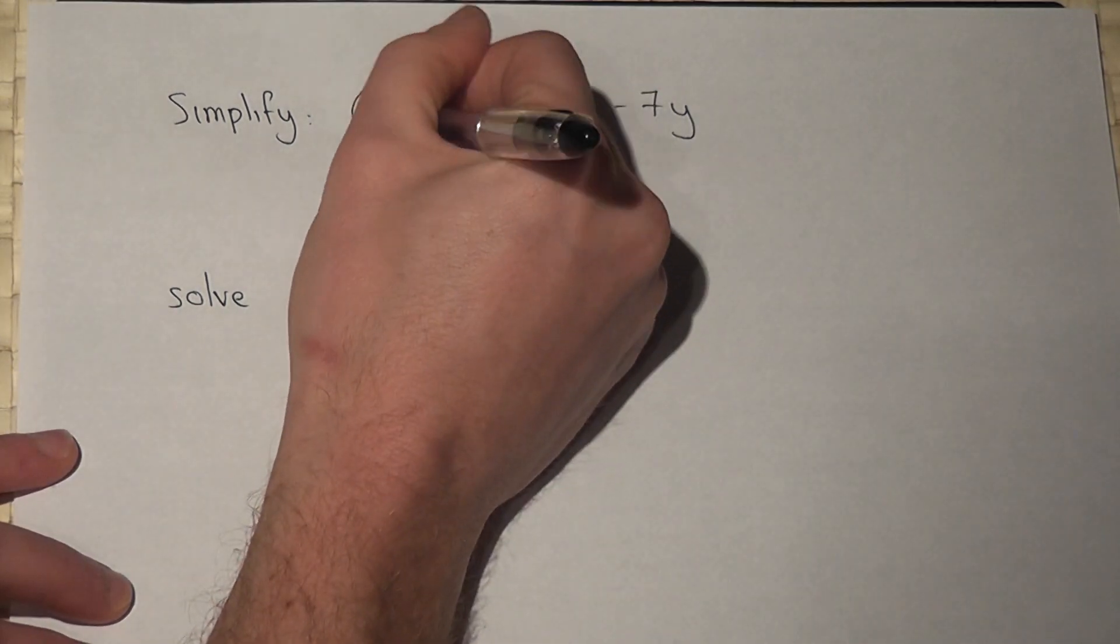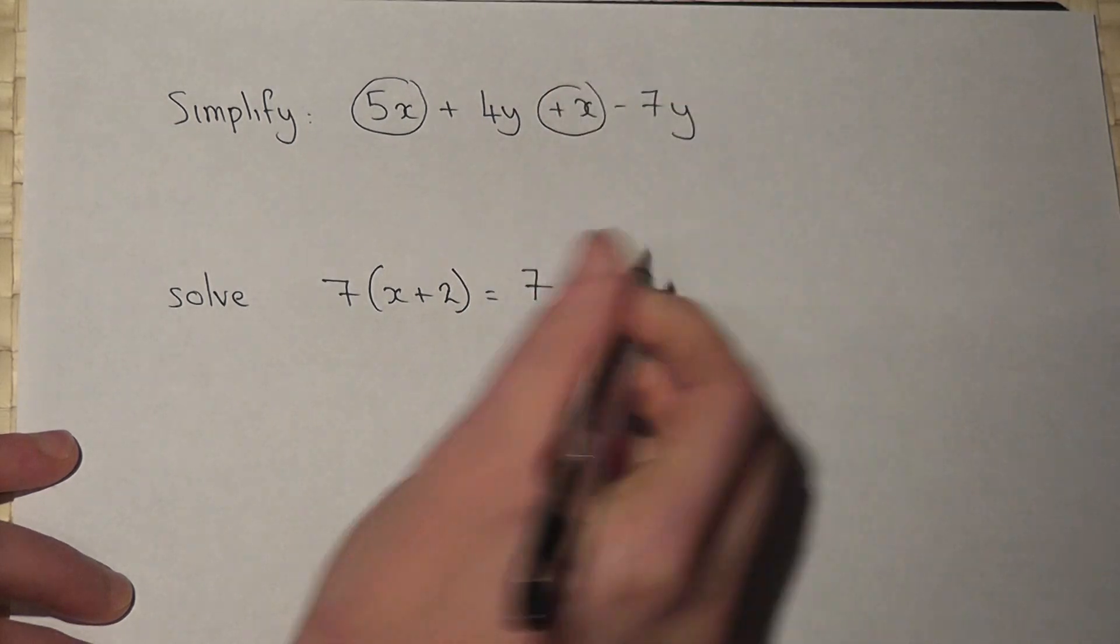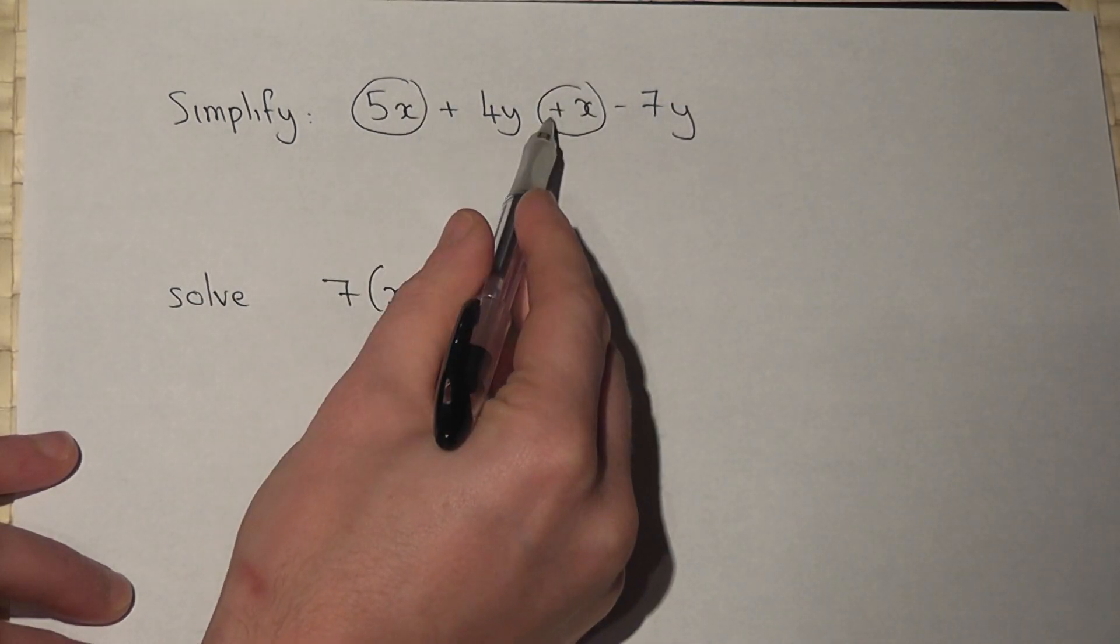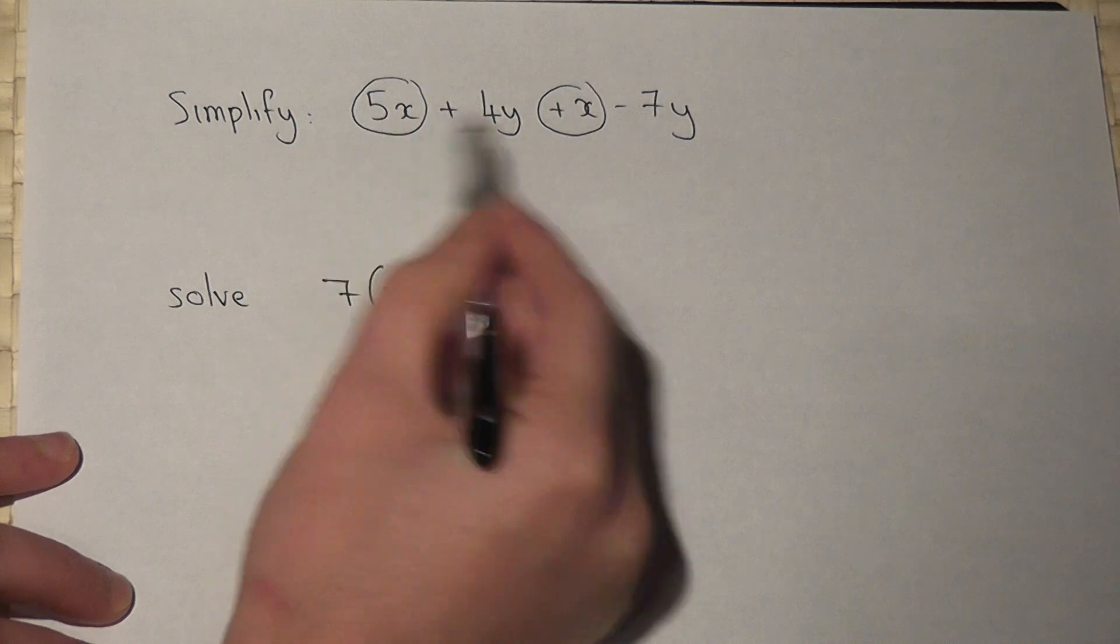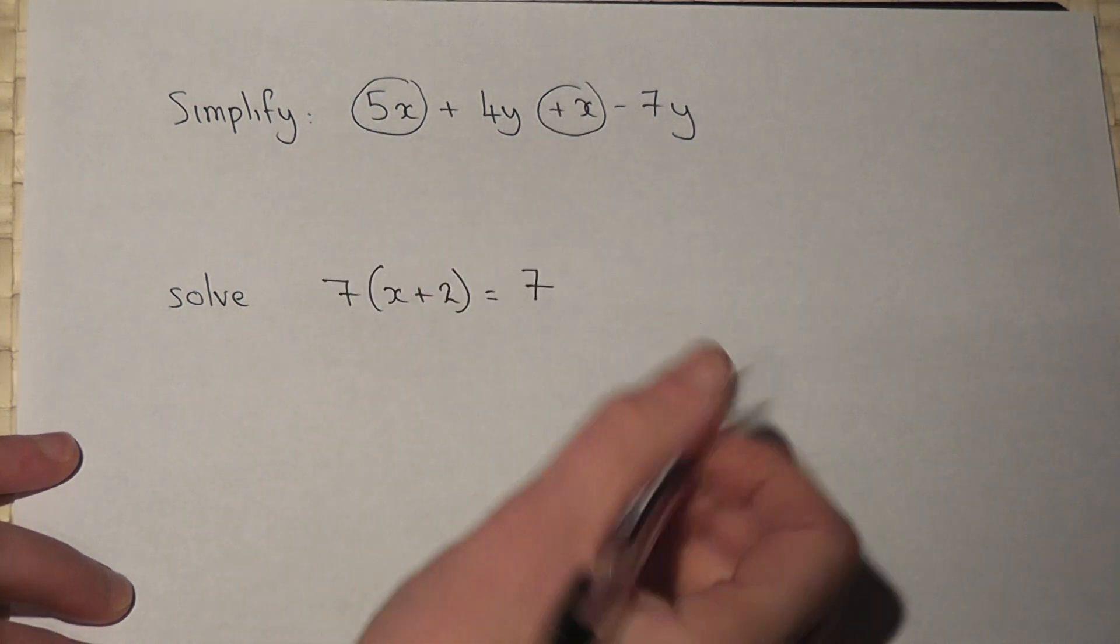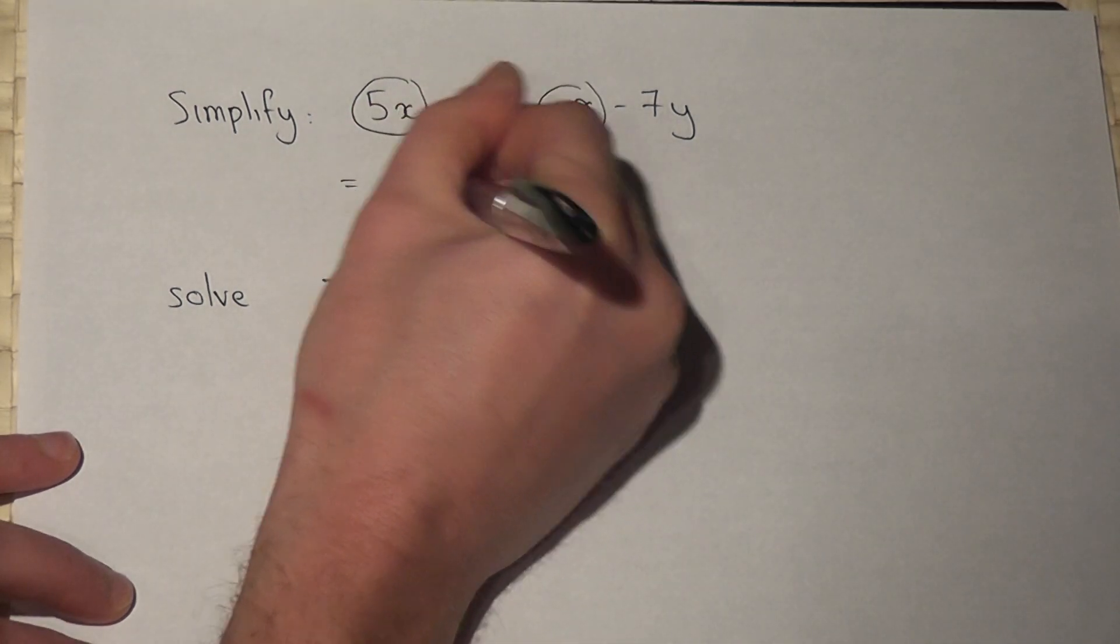If I look at just the x terms, I've got a 5x and an x. So 5x plus 1x is equal to 6x.